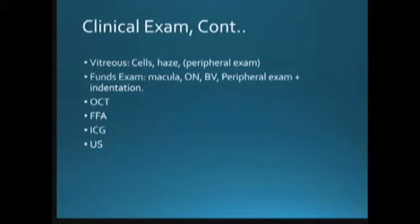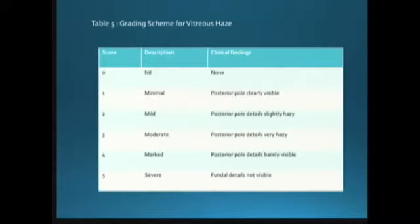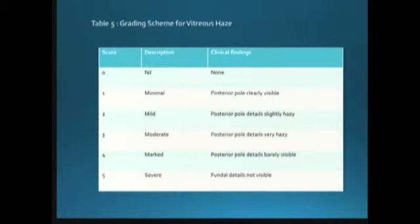You will do the vitreous exam and fundus exam. Tests such as OCT, FFA, ICG, and ultrasound are helpful when needed, but not to reach the exact diagnosis — rather to provide supportive findings. For vitreous haze grading: zero is nil, plus one is minimal with disc clearly visible, going up to four or five when severe fundal details are not visible, usually associated with severe vitritis. Causes of bad vitritis include acute retinal necrosis and toxoplasmosis.